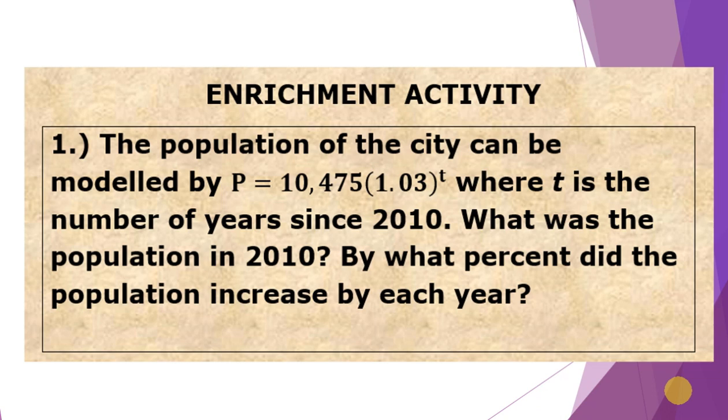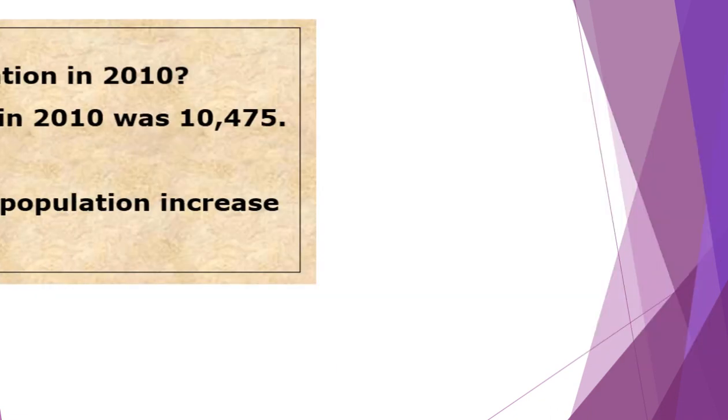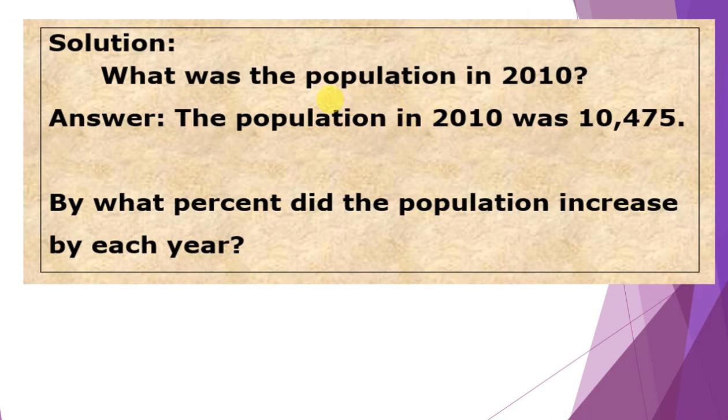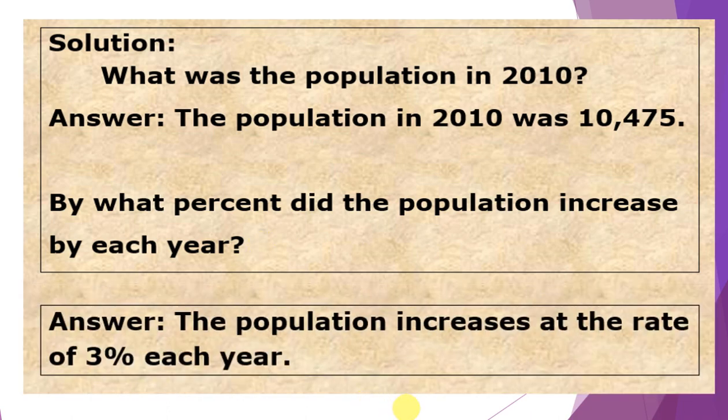We have the enrichment activity. The population of the city can be modeled by P = 10,475(1.03)ᵗ, where T is the number of years since 2010. What was the population in 2010? And by what percent did the population increase each year? Answering the question: population in 2010, that's the initial amount of 10,475. And the percent increase each year is 3%. This solves number one.